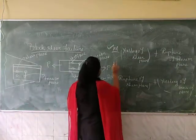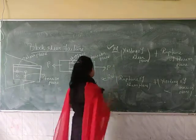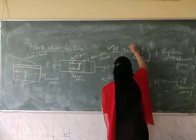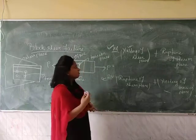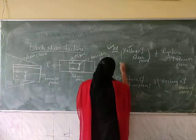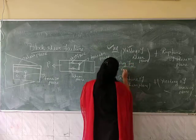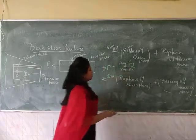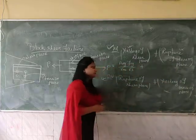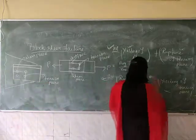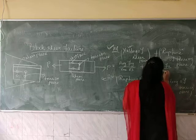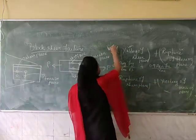According to these two combinations, the IS code has given two formulae to calculate block shear strength. For the first combination — yielding of shear plane — the formula is: Avg × Fy / (γm0 × √3). For rupture of the tension plane, the formula is: 0.9 × Atn × Fu / γm1. This is the first combination, Tdb1.